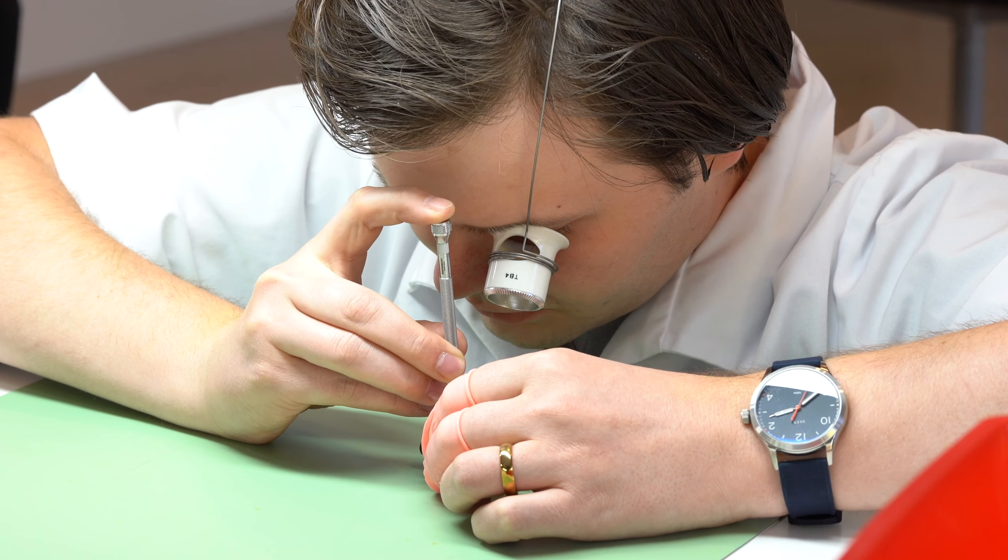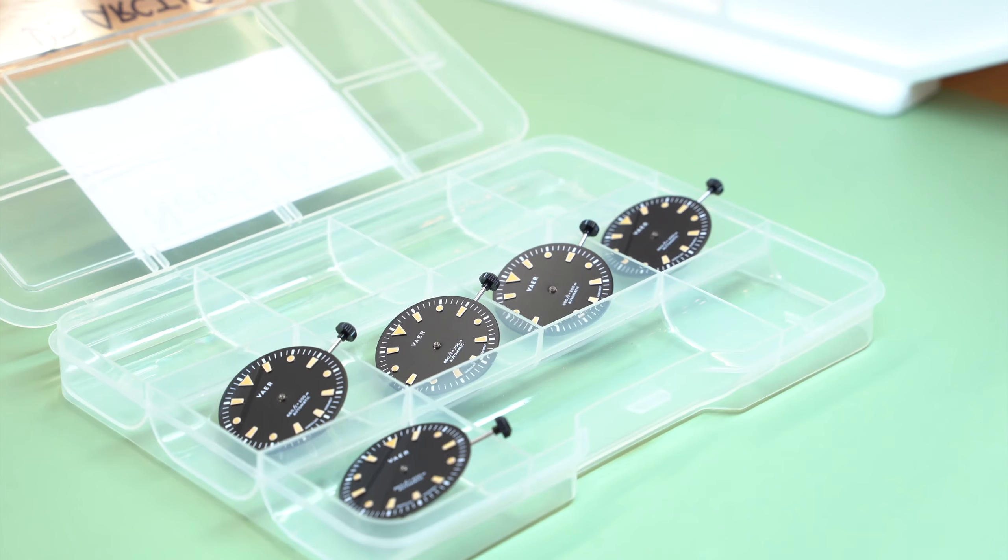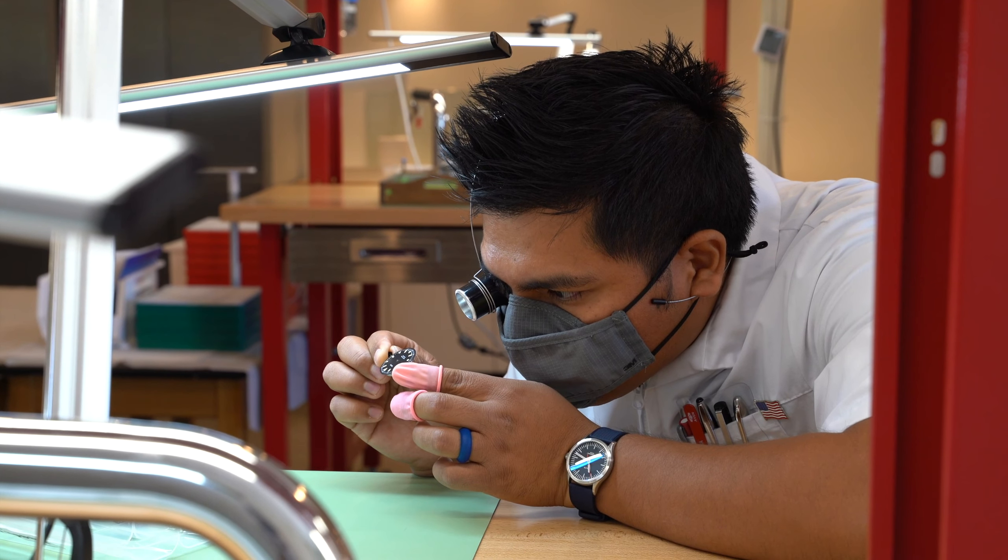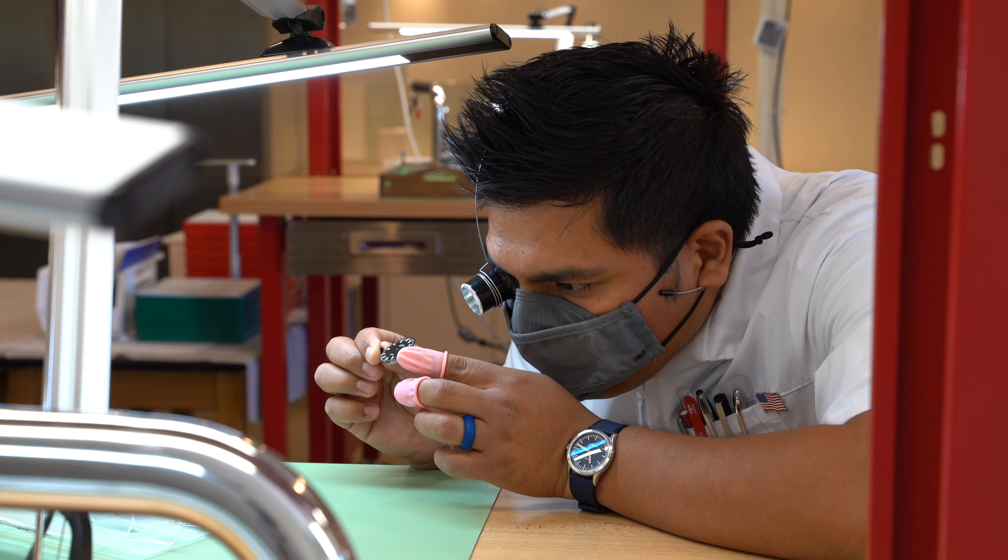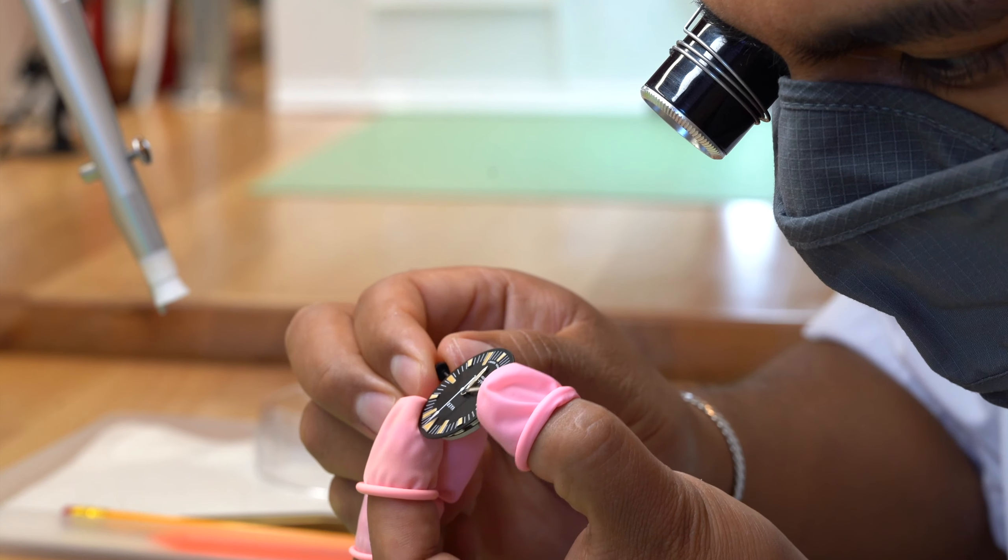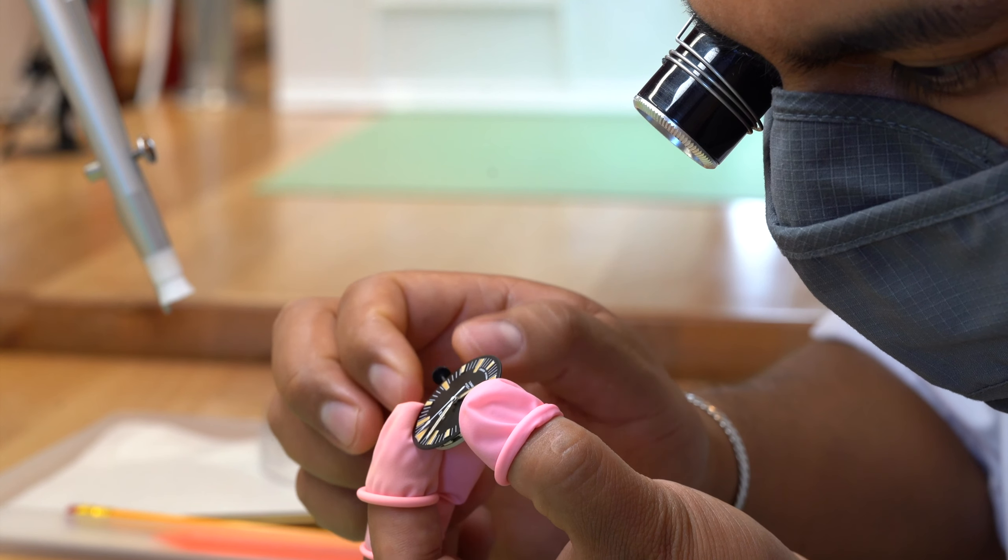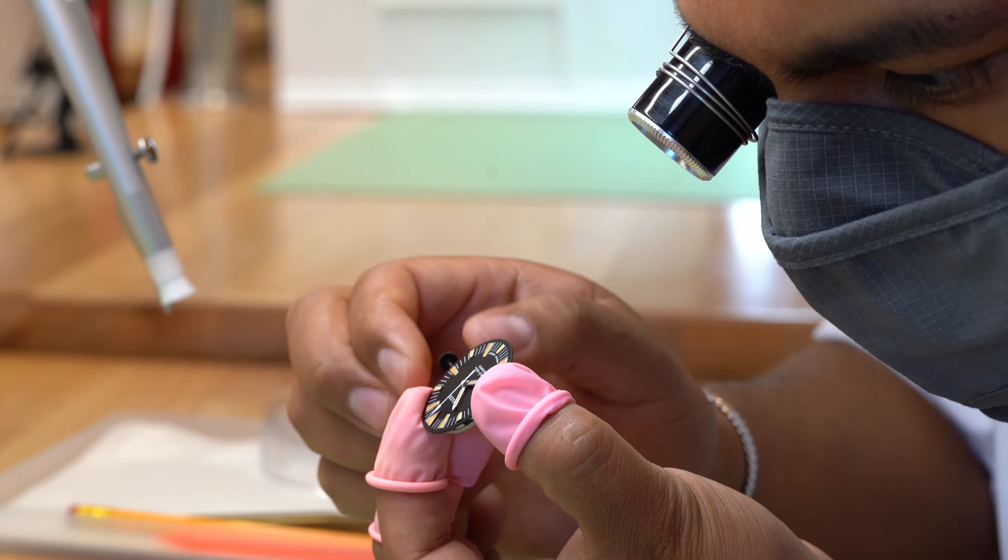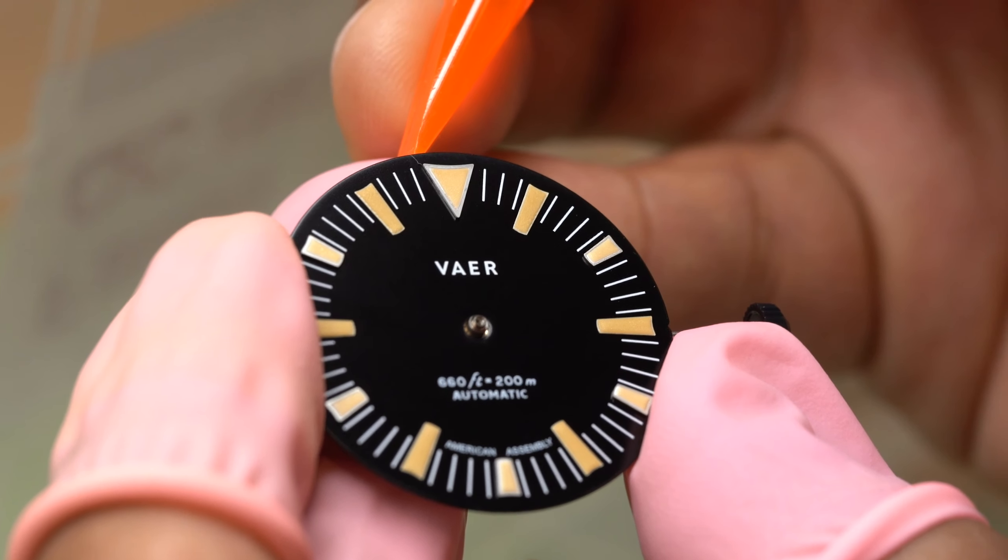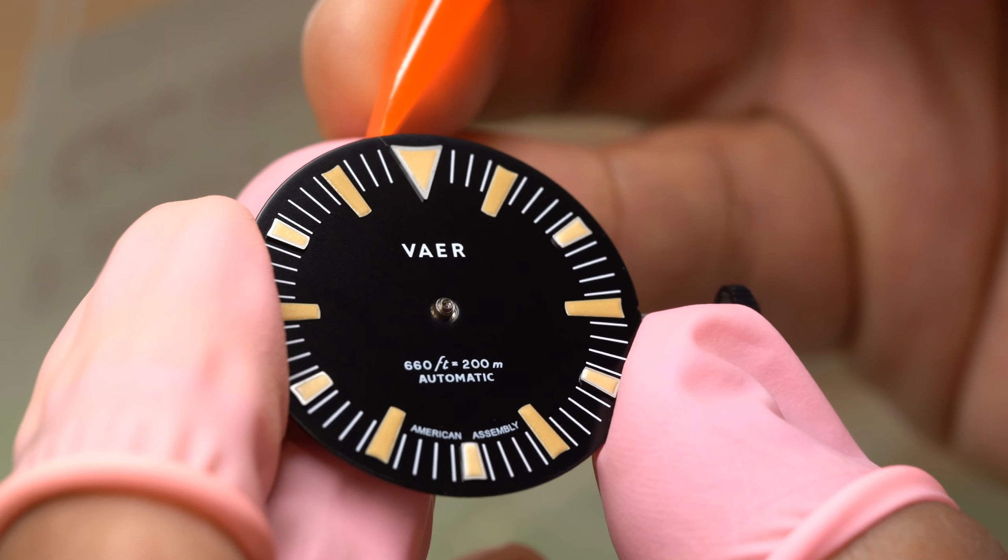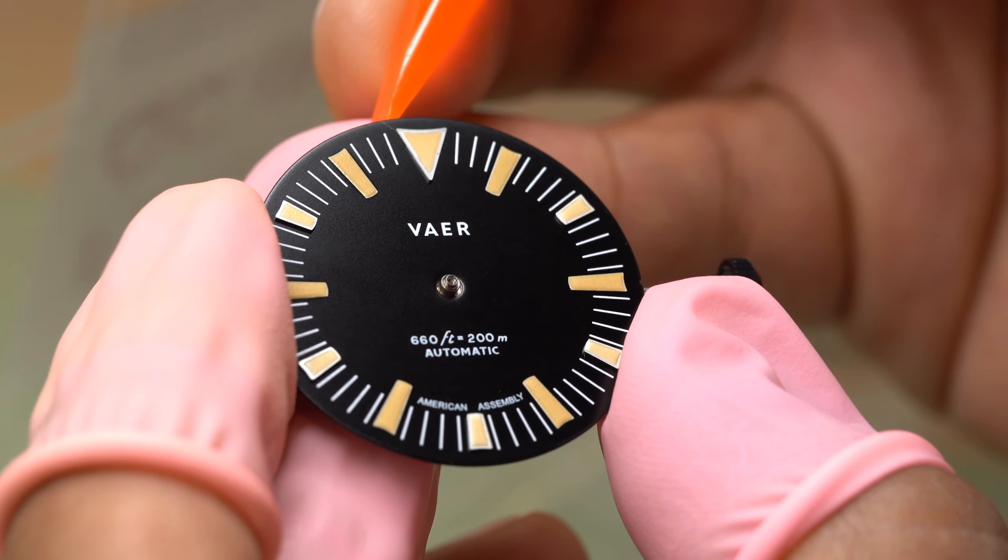Once the dials are attached to the movements, they're set in a tray for the first assembly QC check. QC is done for the exact same reason we use a clean room, lab coats, air filtration, and finger cots: making mistakes with US assembly costs a lot of money. QC helps us catch issues early and make the most of our technicians' time. In this clip, you can see the type of issue that might be caught at this stage, where you have a small fiber embedded under the 12 o'clock index. This watch would fail QC and be cleaned before moving on to the next stage, which is hand installation.